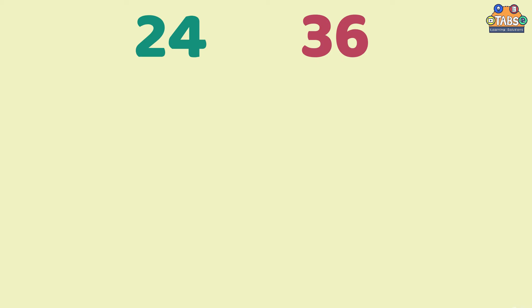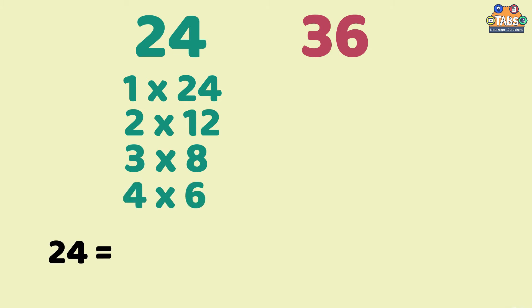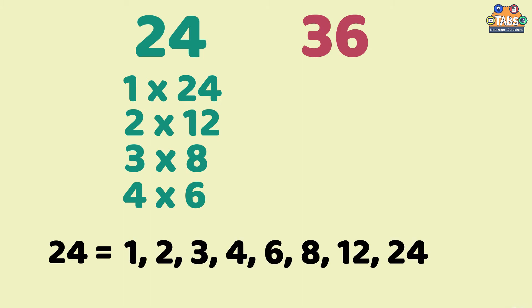Let us get the GCF of 24 and 36 using the listing method. For 24, the factors are 1 and 24, 2 and 12, 3 and 8, and 4 and 6. Therefore, 24 has 1, 2, 3, 4, 6, 8, 12, and 24 as each factor.